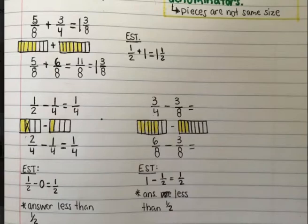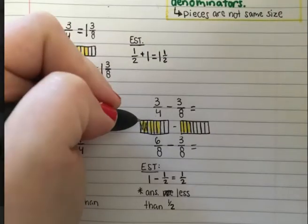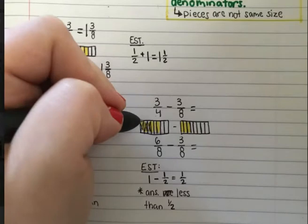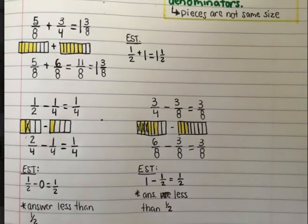So let's take a look — is that true? Six eighths take away three eighths: I take away one eighth, two eighths, and three eighths. How much do I have left? We have three eighths remaining. So six eighths take away three eighths is three eighths, which is less than a half, because four eighths equals a half. So three fourths take away three eighths is three eighths.